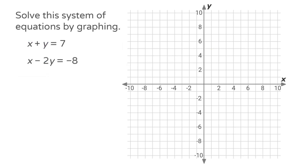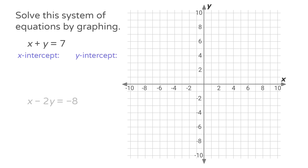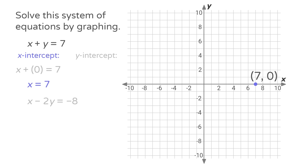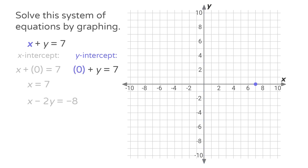One more. Solve this system of equations by graphing: x plus y equals 7, and x minus 2y equals negative 8. The first equation is x plus y equals 7, and this time it's not in slope-intercept form — it's in standard form. We can graph a line in standard form by finding the x-intercept and the y-intercept. The x-intercept is on the x-axis where y equals 0. Plugging y equals 0 into the equation, we find that x equals 7, so one point on the graph is (7, 0). The y-intercept is on the y-axis where x equals 0. Plugging x equals 0, we find y equals 7, so another point on the line is (0, 7). Let's plot (0, 7) and draw the line connecting them.